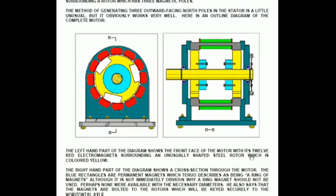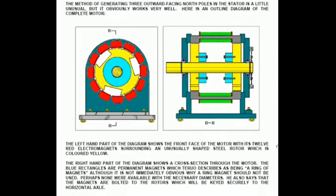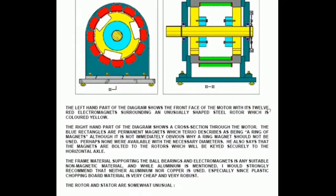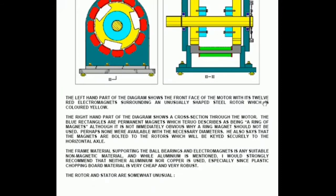The blue rectangles are, as I said, permanent magnets but he describes them as being a ring of magnets although it's not immediately obvious why a ring magnet should not be used. Perhaps none were available with the necessary diameters. He also says that the magnets are bolted to the rotors which will be keyed securely to the horizontal axle.